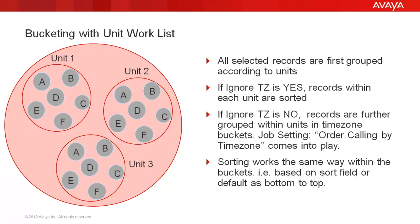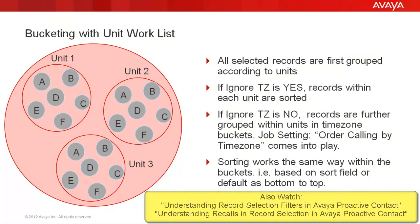The sorting and timezone bucketing rules still apply, but within these groups. For example, if ignore timezone is yes, within unit 1, all selected records are sorted based on the sort field or the default bottom-to-top method. If ignore timezone is no, the job setting 'order calling by timezone' comes into picture as we saw earlier. Basically, it's no different than what we saw earlier — it's just that the records are first grouped by units, then grouped by timezones, and then within the timezone buckets, they are sorted. So we saw in a record selection how the records are grouped and sorted in different scenarios.